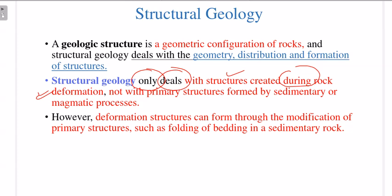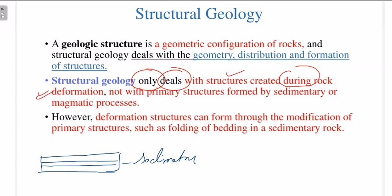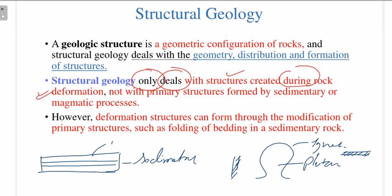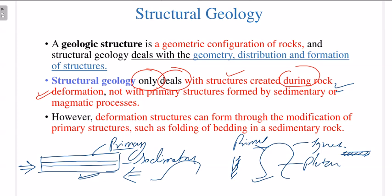When a rock is deposited grain by grain, it is generally horizontal — if you are talking about sedimentary rock. For igneous rocks, the primary structures are called plutons, dikes, or sills. These are the primary structures. Structural geology does not deal with these primary structures. It only deals with structures created during rock deformation — meaning when regional or tectonic forces act upon a rock and deform it into a different structure, that is called a secondary structure.